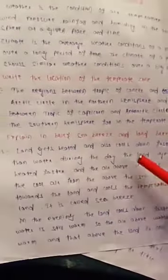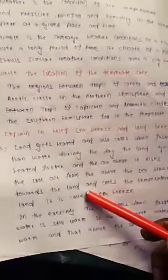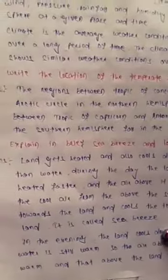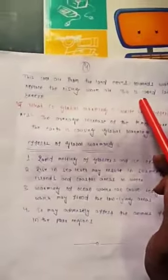Explain in brief sea breeze and land breeze. Land gets heated and also cools down faster than water. During the day, the land gets heated faster and the air above it rises. So the cool air from above the sea blows towards the land and cools the temperature on land. It is called sea breeze. In the evening, the land cools down faster and water is still warm. So the air above water is warm and that above the land is cool. This cool air from the land moves towards water, replacing the rising warm air. This is called land breeze.